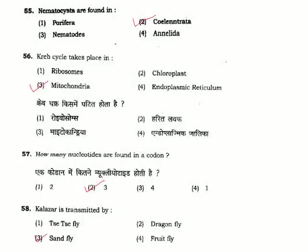Question 57: How many nucleotides are found in a codon — a codon is a triplet of 3 nucleotides. Correct answer is Option 2.